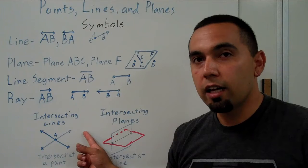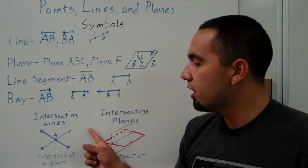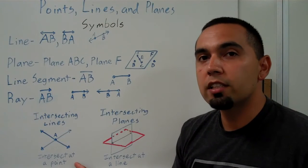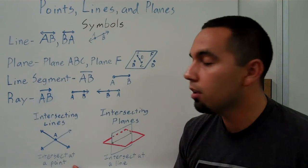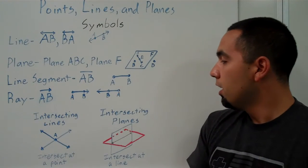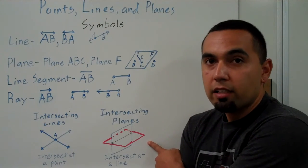We also have intersecting lines. Intersecting lines, all you need to know is that whenever you have two lines that intersect, they always intersect at a point. And that should be clearly defined. So in this case, they intersect at point A.